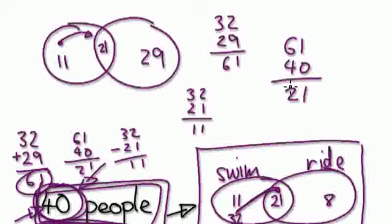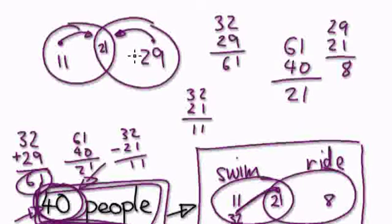And then over here, it was 29, and then 21 moved into that overlapping section. So it would be 29 take away 21 here. This would be 8. So this here would be 8.